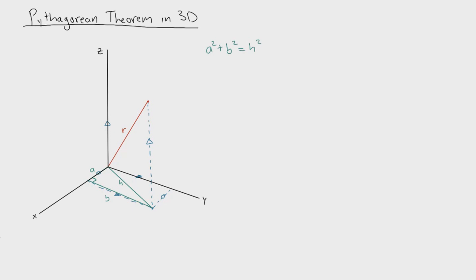So now we actually construct another right triangle. So from this projection, from here to here, and then from here to the origin.